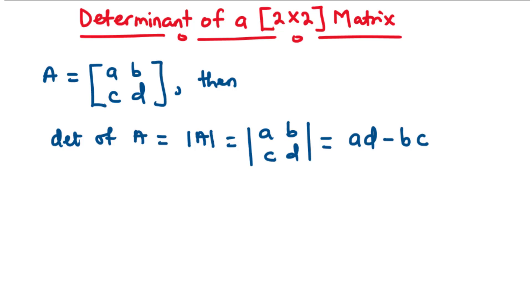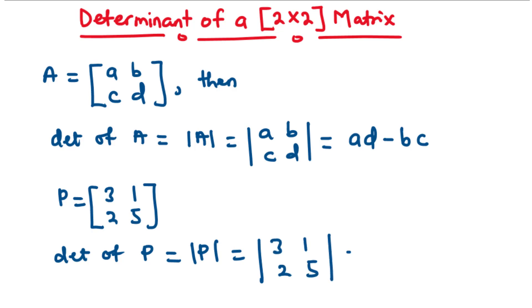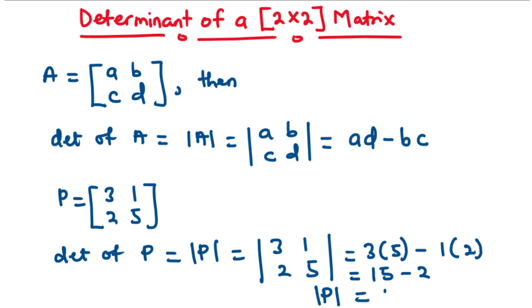Now let's take an example. Given that matrix P is equal to 3, 1, 2, 5, let's find the determinant of P. So the determinant of matrix P is equal to the absolute value of P, and that is [[3, 1], [2, 5]]. Now let's multiply A and D: 3 and 5. So we have 3 times 5 minus 1 times 2. 3 times 5 is 15, and 1 times 2 is 2. Therefore, the determinant of P is equal to 13.